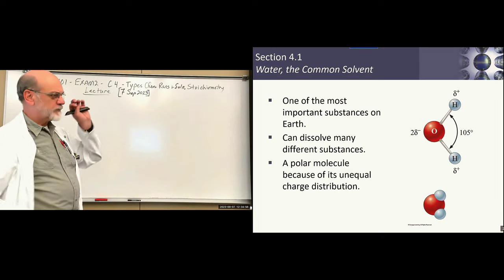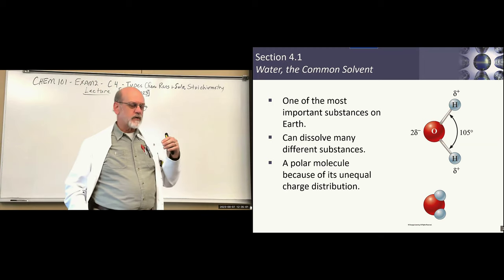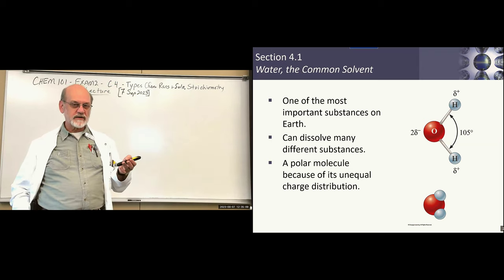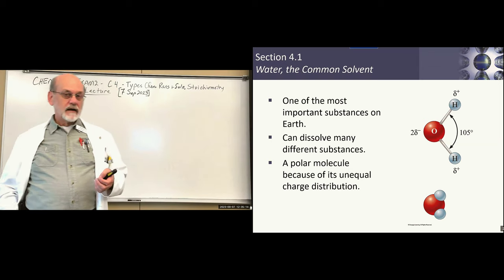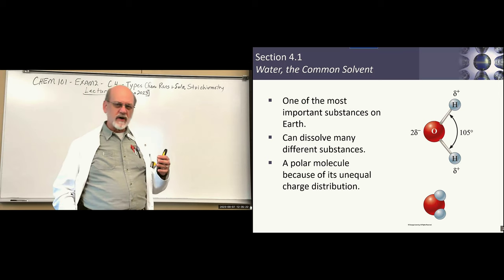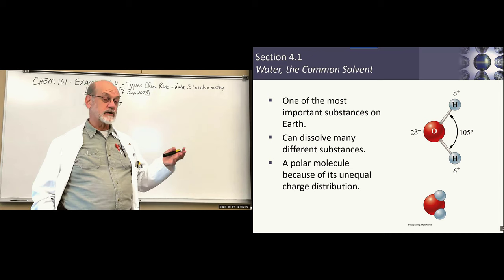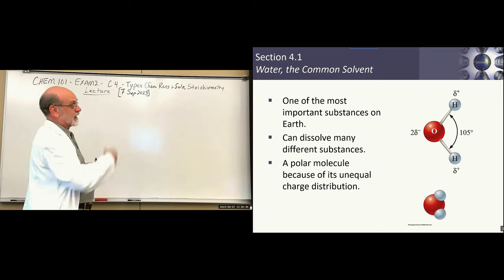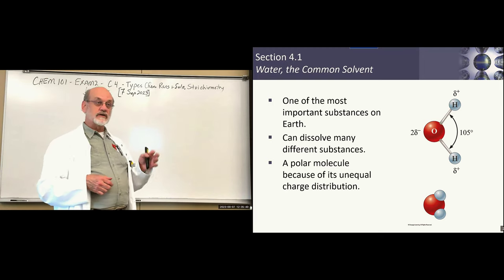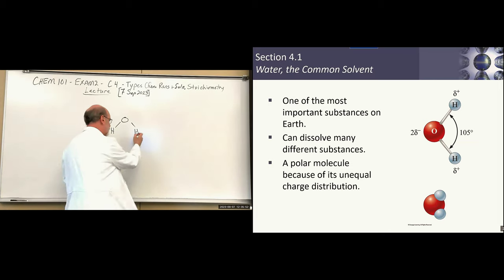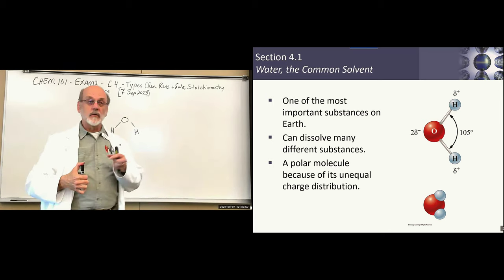We're going to start off with a discussion of solvents. For our purposes, we're going to focus ninety-nine percent of the time on water as our solvent. That makes sense, especially where we're dealing mostly with life sciences students. We need to characterize the solvent. For now, it's sufficient to say that water on a molecular scale is a bent molecule — oxygen and two hydrogens. Later this semester we'll learn how to show that water is a bent molecule.